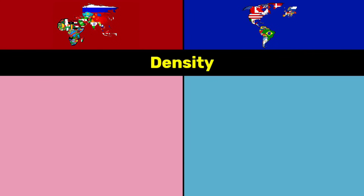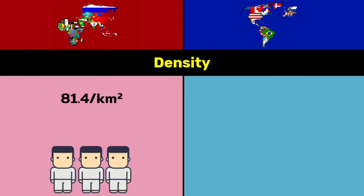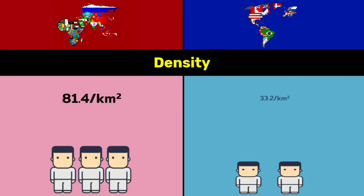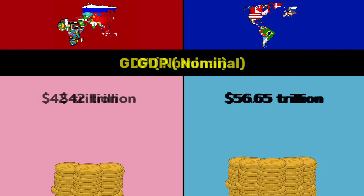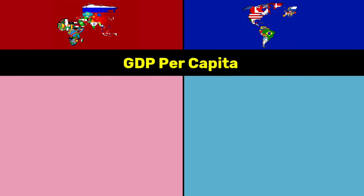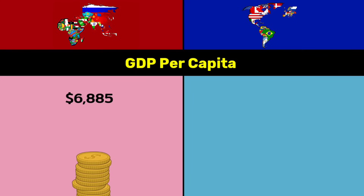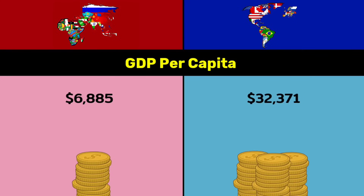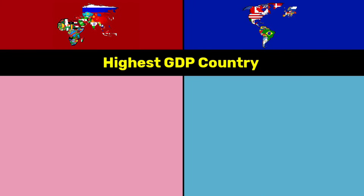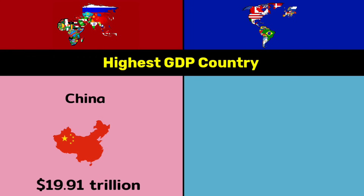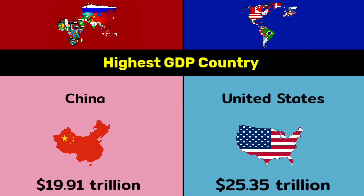Density: 81.4 per square kilometer vs 33.2 per square kilometer. Nominal GDP: 42 trillion dollars vs 56 trillion dollars. GDP per capita: $6,885 vs $32,371. Highest GDP country: China at $19.9 trillion vs United States at $25.35 trillion.